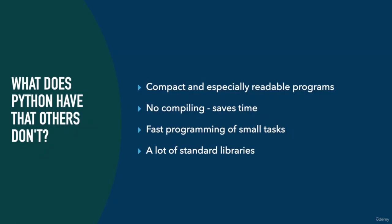So what does Python have that other programming languages don't have? It has a clear and structured way of coding, which produces very compact and especially readable programs. You don't need to compile what you do, so it doesn't have to be rendered or calculated by the computer, and this saves a lot of time. You can run all your applications right away. It also brings fast programming of small tasks. Python is not very powerful out of the box but it brings a lot of plugins, extensions, and standard libraries that make it very powerful.